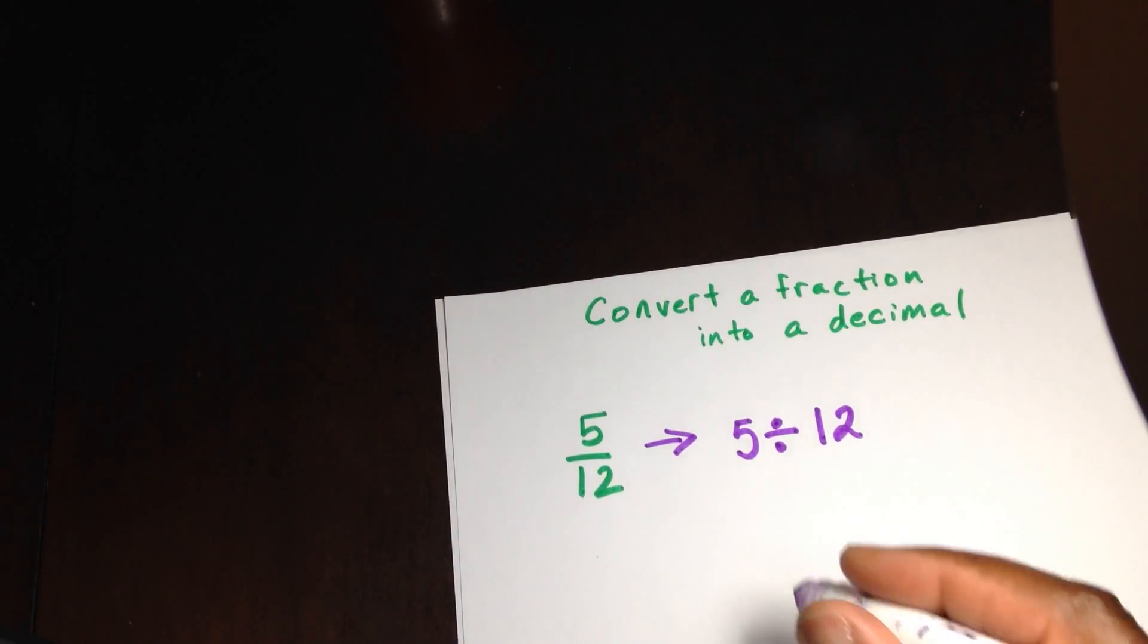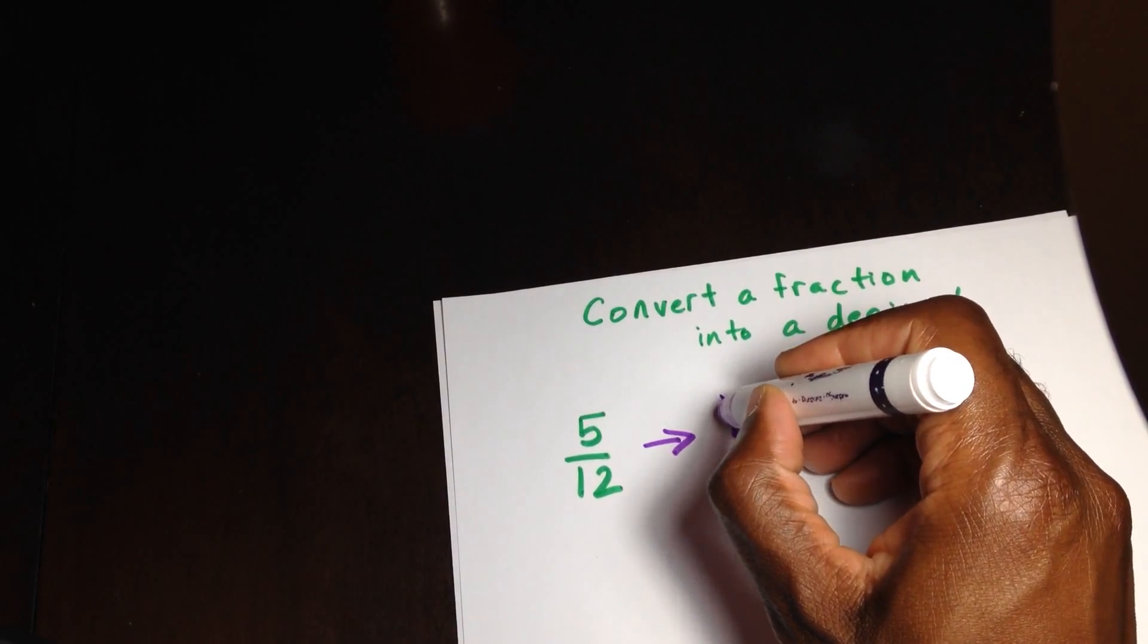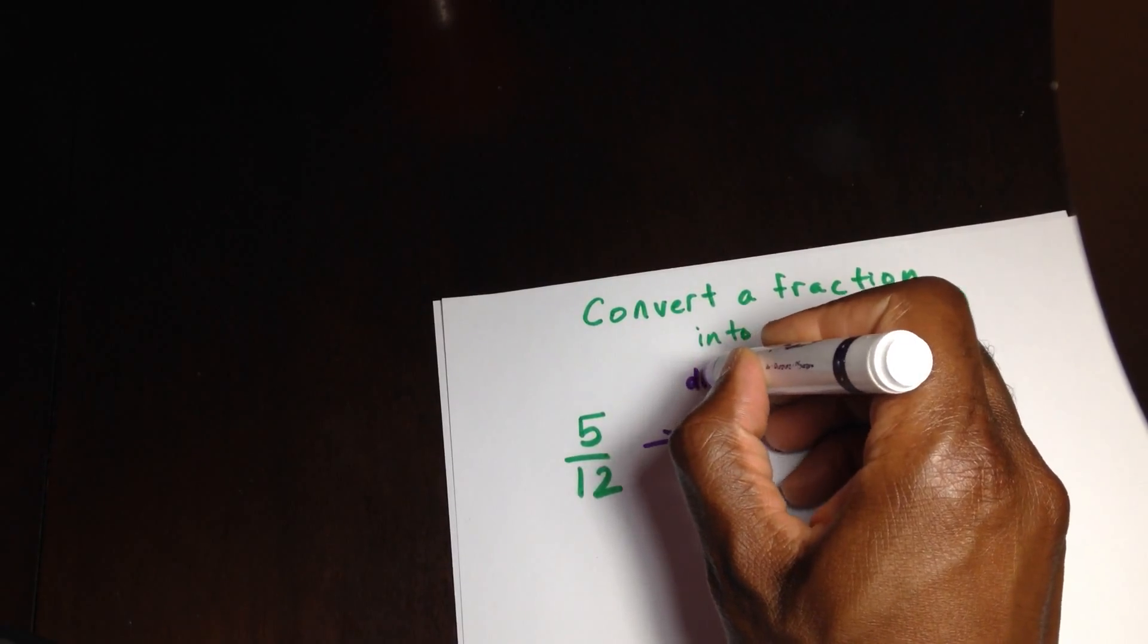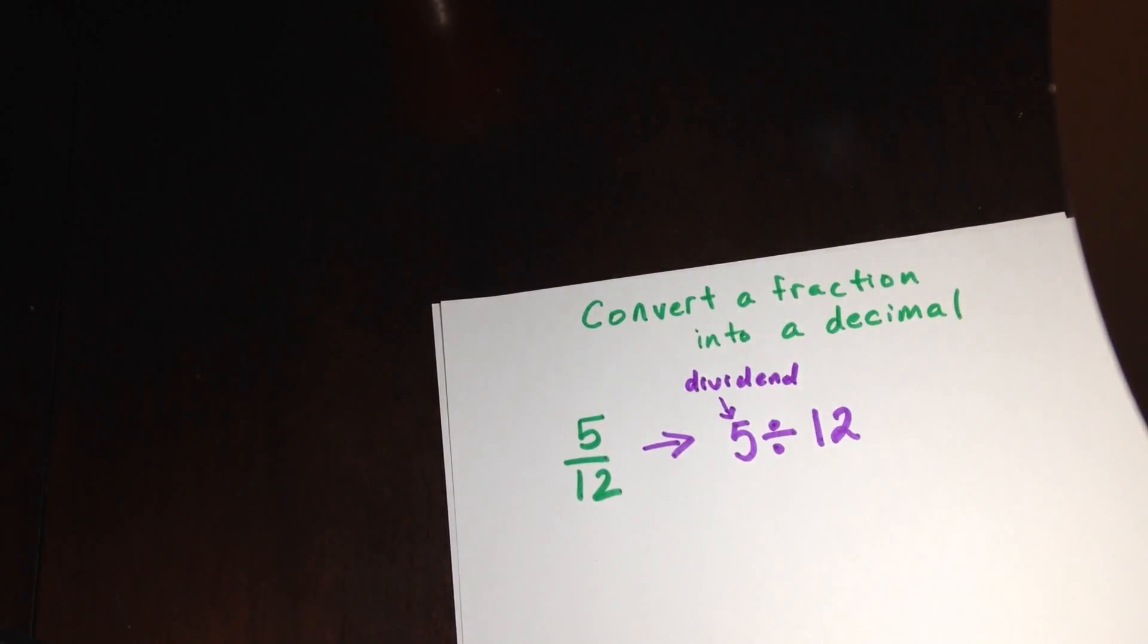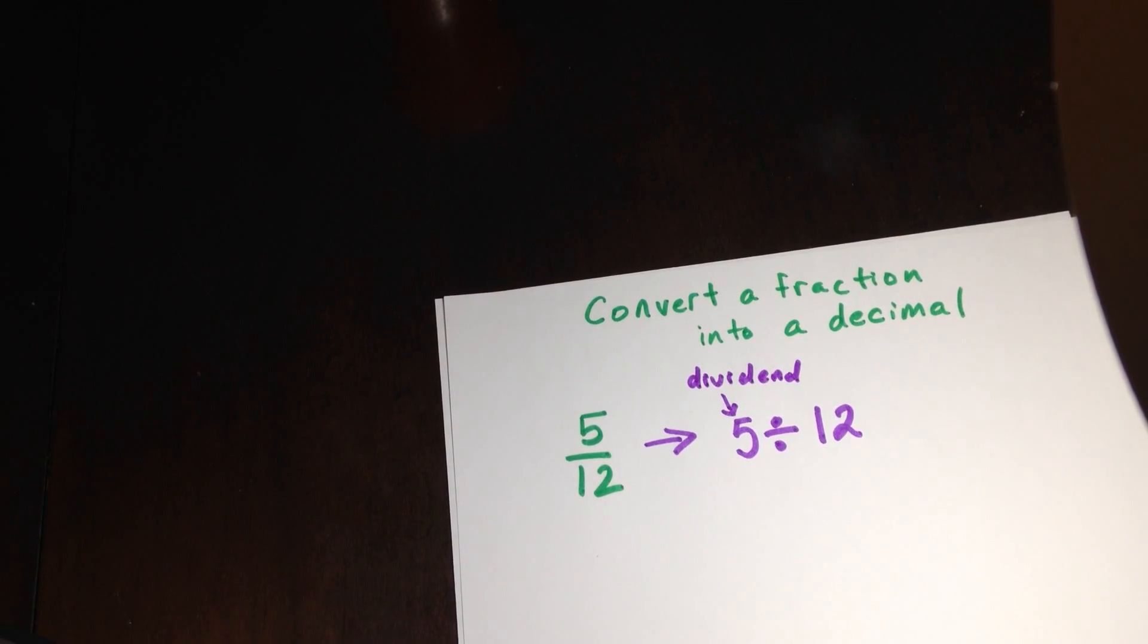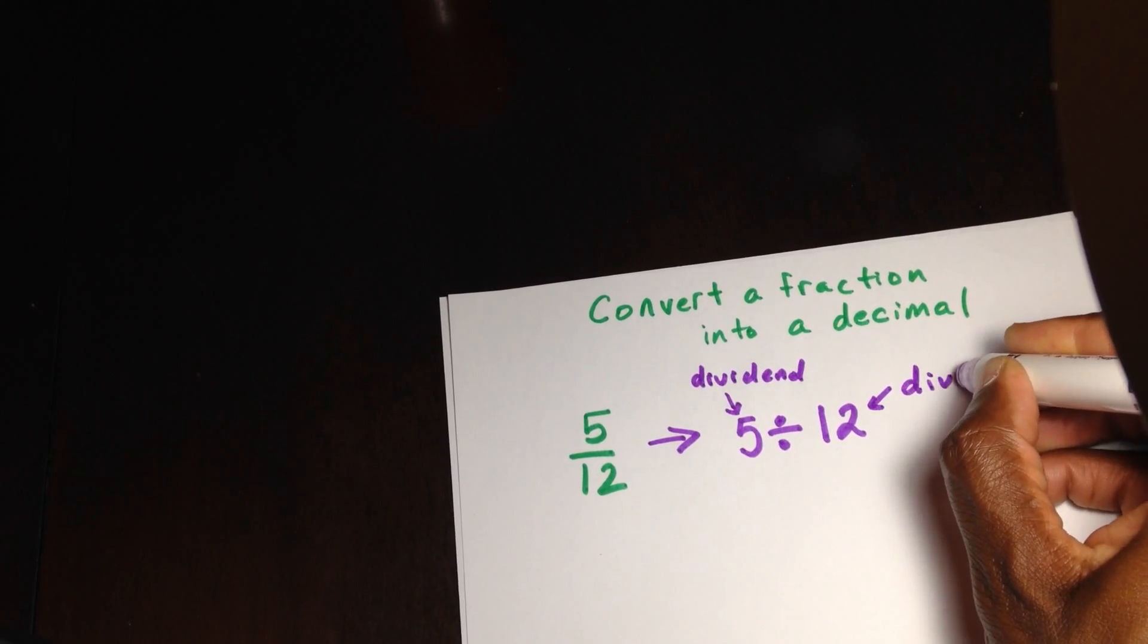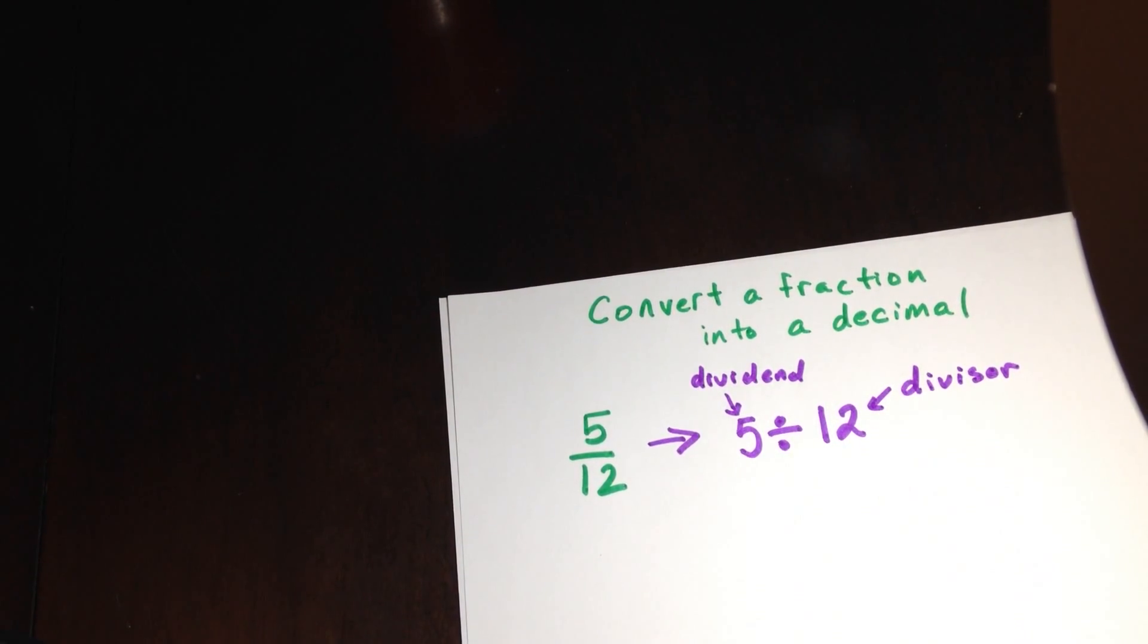Now when I rewrite it this way, let's go into a little bit of vocabulary. This is the dividend. This is the number that's being divided. And now 12 is the divisor. This is the number that's going to be dividing.